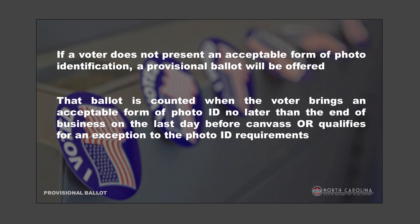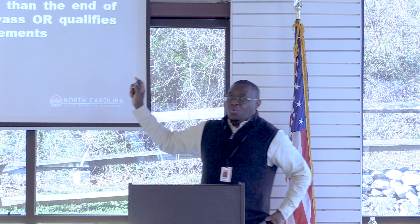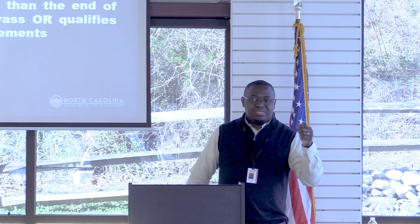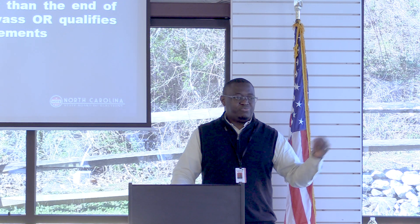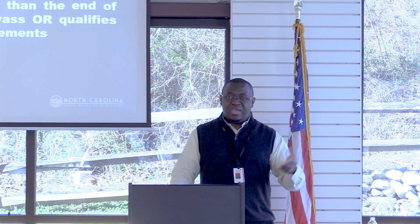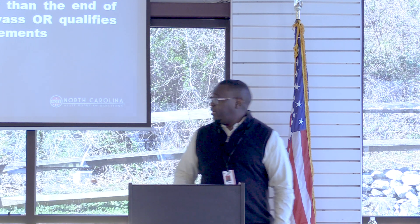If a voter can't present an acceptable form of ID, they vote provisionally, then can either bring a photo ID or fill out an exception form before the end of the last business day before canvass — about 10 days after the election. One easier option: if your ID is expired and you have a renewal paper, just fill out an exception form right there while voting provisionally, noting the ID is in the mail, and you're done.